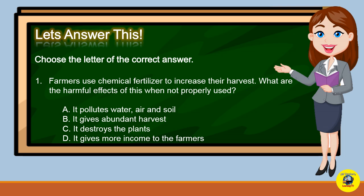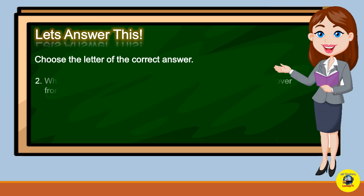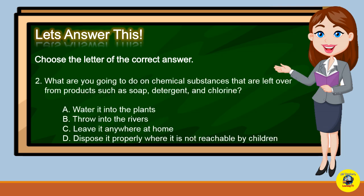Choose the letter of the correct answer. Number 1: Farmers use chemical fertilizers to increase their harvests. What are the harmful effects of these when not properly used? A. It pollutes water, air, and soil. B. It gives abundant harvest. C. It destroys the plant. Or D. It gives more income to the farmers. What is your answer?